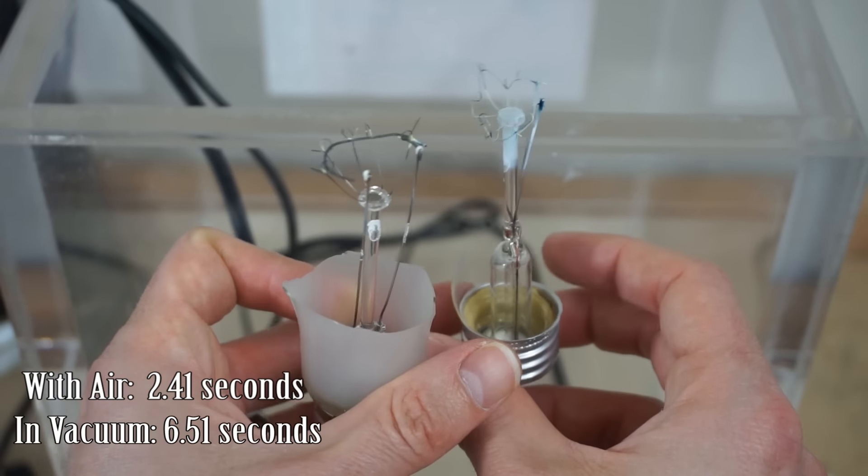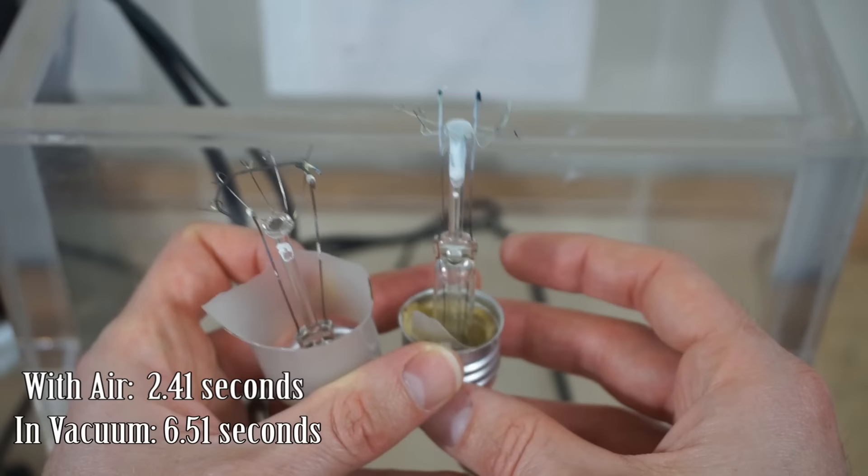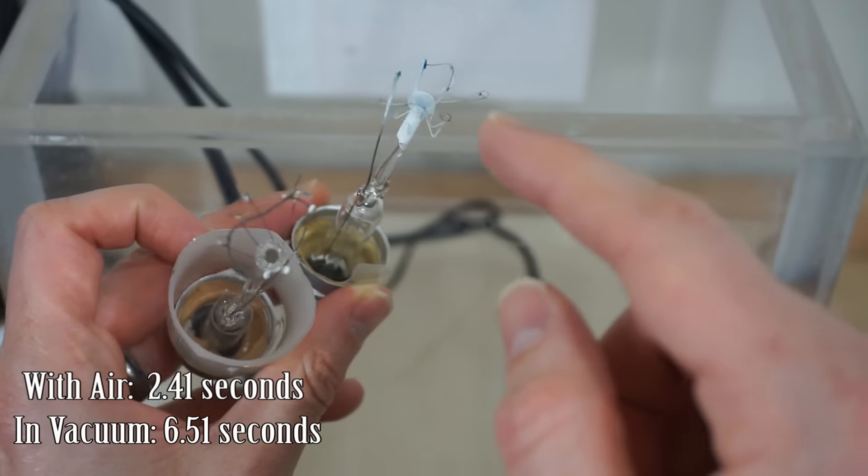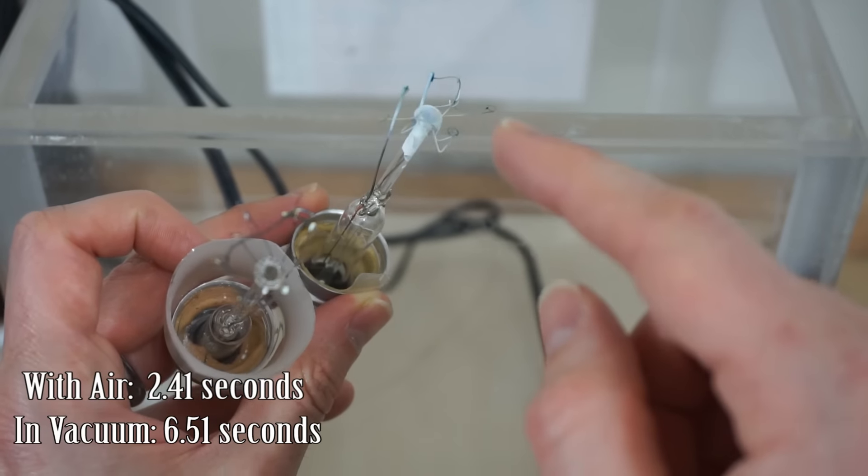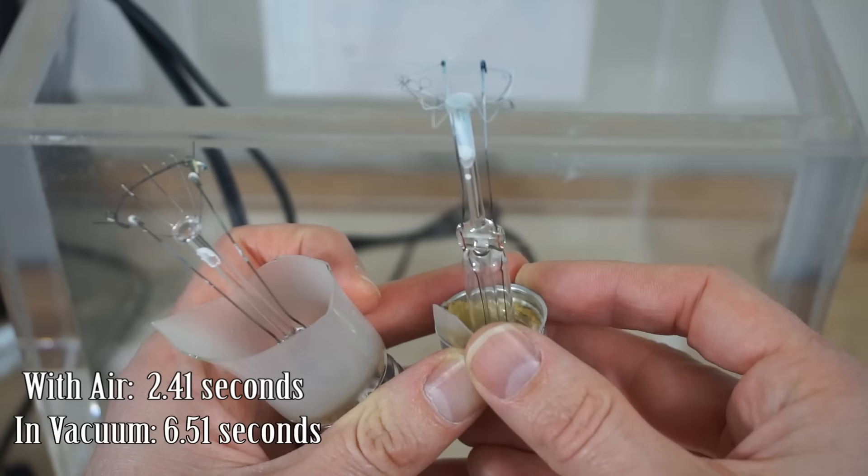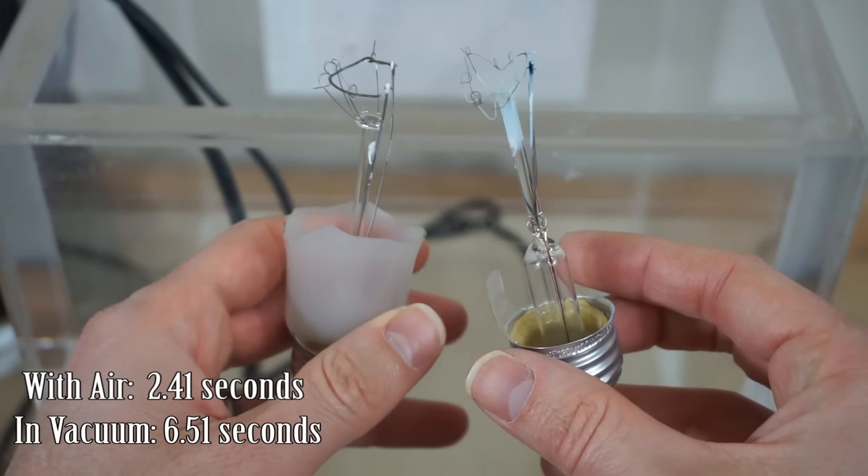I noticed the filament. These are the exact same light bulbs, but the filament in the one I used in air was a lot thicker, and the filament I used in the vacuum chamber was a lot thinner. You can barely see it. I don't know why there's that big of a difference between the two, but that could have been a factor.